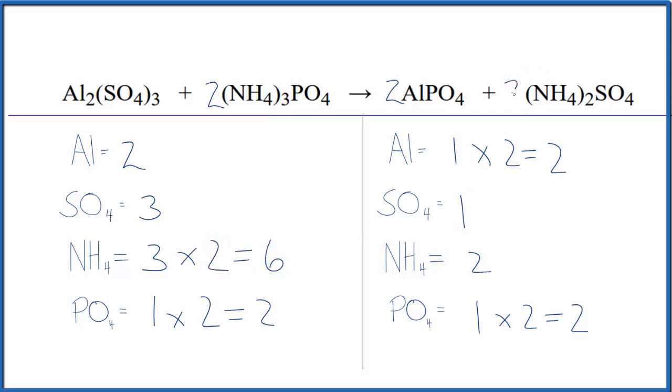Over here, we'll just put a three in front of the ammonium sulfate. Three times two, that'll give us six of these ammonium ions here, that's balanced. Three times the one sulfate, that'll give us three, that's balanced. We're done. This equation is balanced.